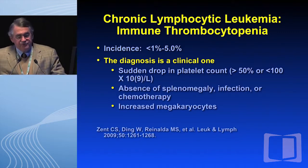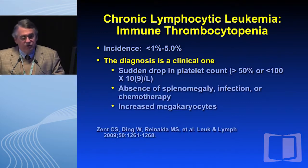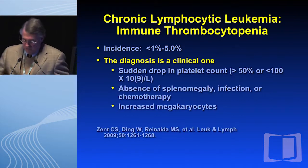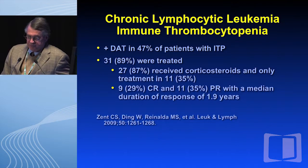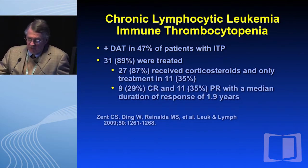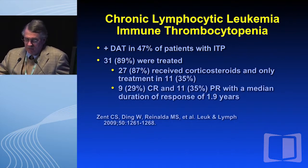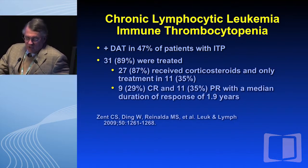What about ITP? The problem with ITP is that it is a clinical diagnosis and we cannot do a single laboratory test to establish it. The incidence is less than 1% to 5% in different series. Interestingly, a positive Coombs test was found in 47% of ITP patients in the Mayo series. In our experience, 89% were treated, the majority with corticosteroids, with 29% achieving complete remission and 35% partial remission, for a median duration of response of 1.9 years.